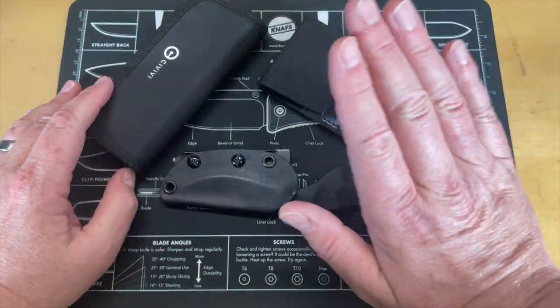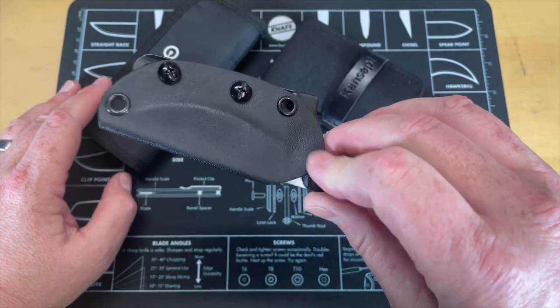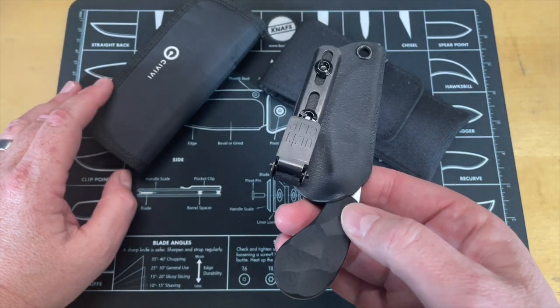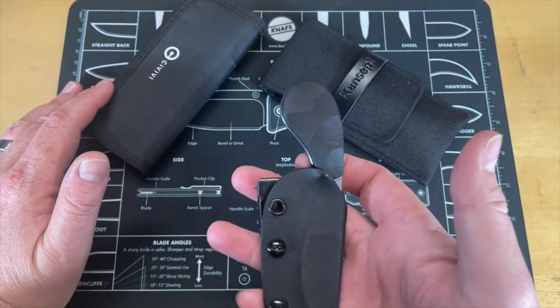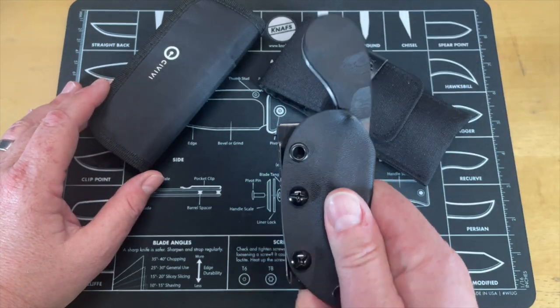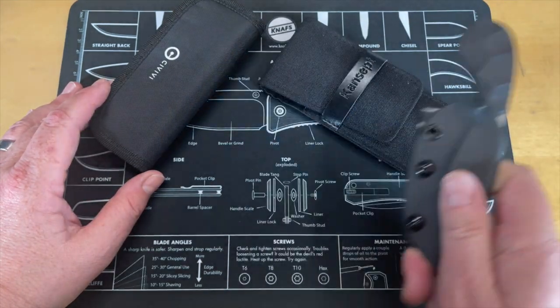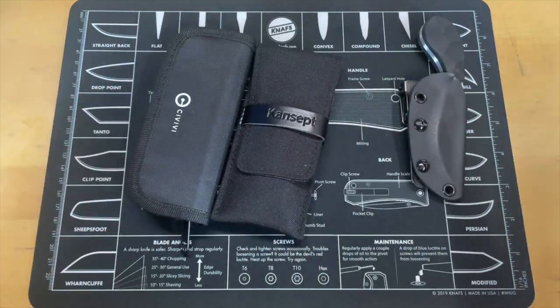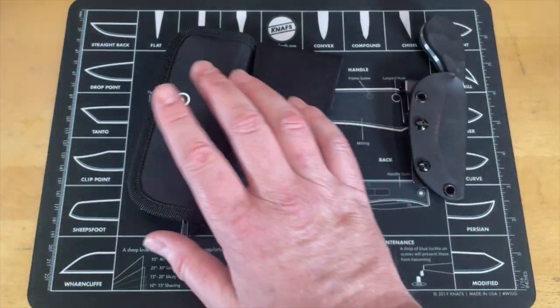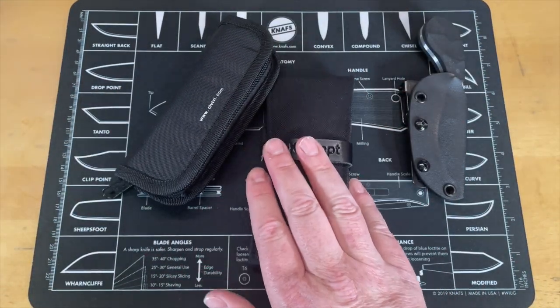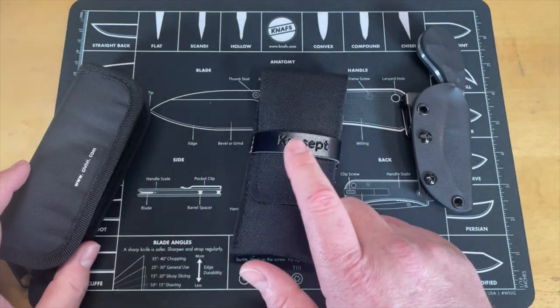Alright guys, this is part three, these are the last three knives of that last box that Jared just sent me. I don't know what's in these two. This is something kind of special, we're gonna save this one for last. I do know what this is, I've been talking with the maker.